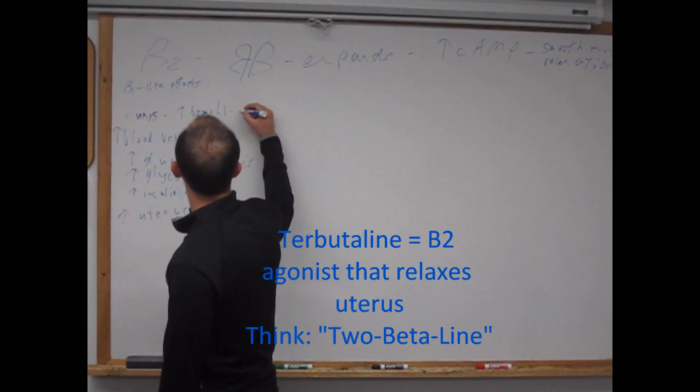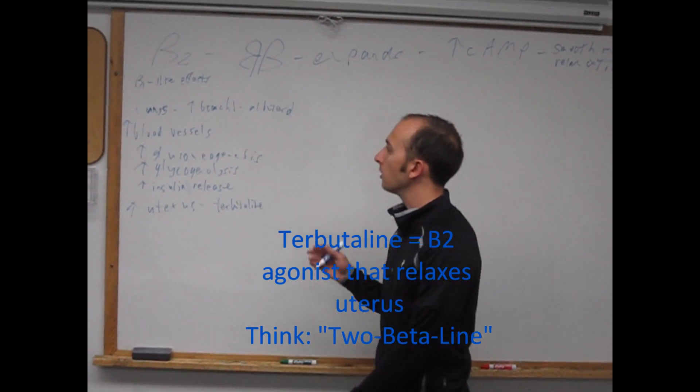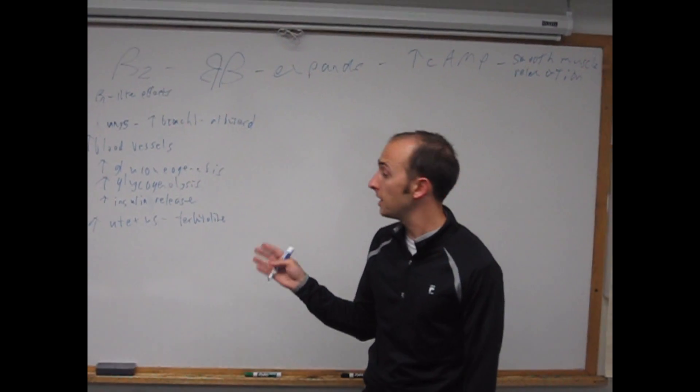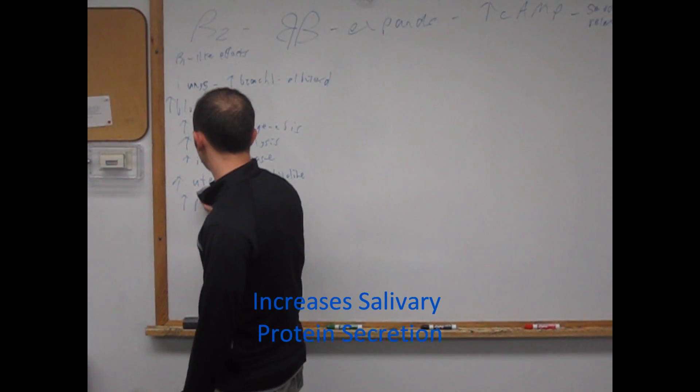I'll put albuterol up here. Both beta 2 agonists. What else is it expanding? Expanding saliva. It's expanding protein secretion in your saliva, increased protein in saliva.